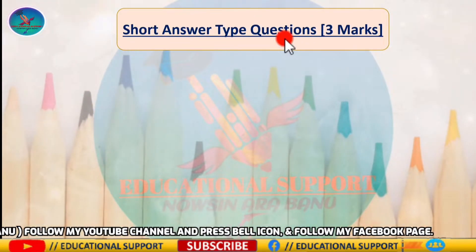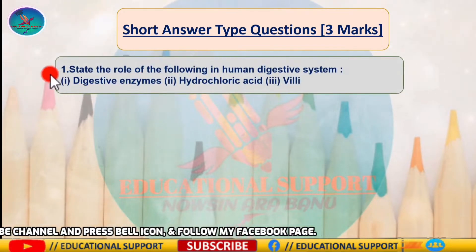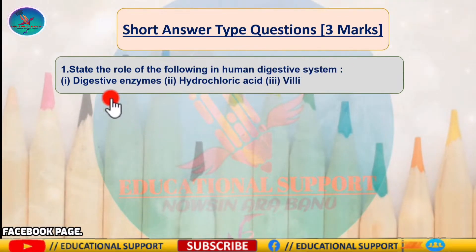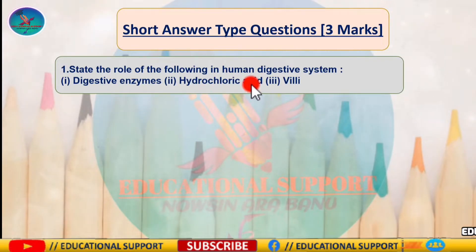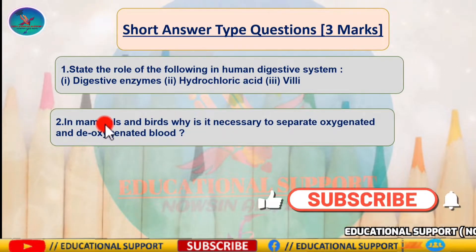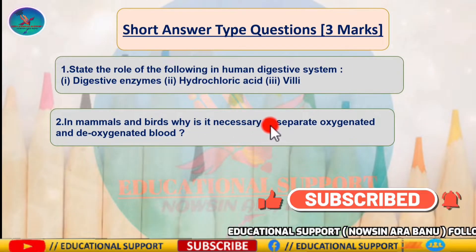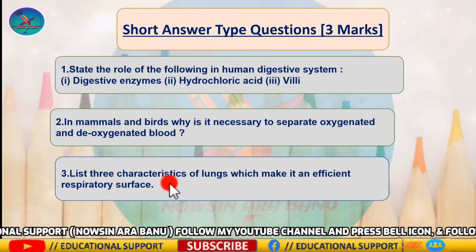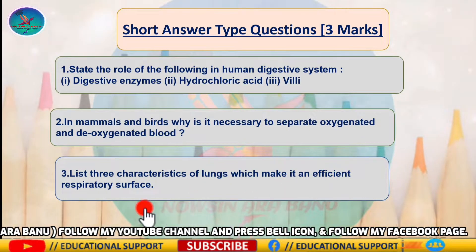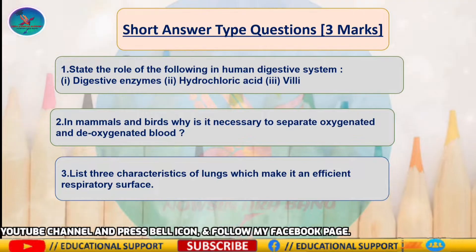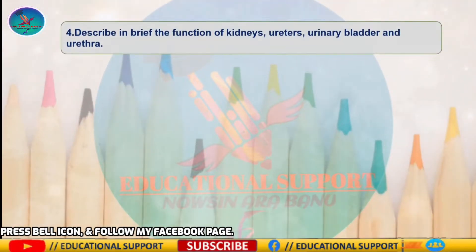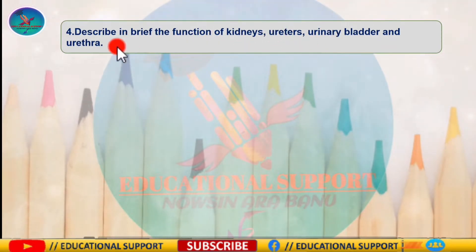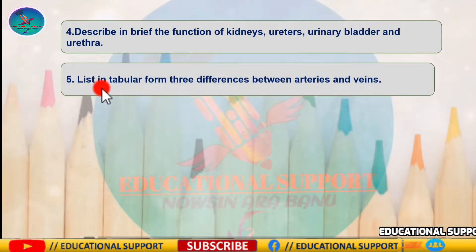Short answer type — three mark questions. Question one: state the role of the following in the human digestive system — digestive enzymes, hydrochloric acid, and villi. Question two: in mammals and birds, why is it necessary to separate oxygenated and deoxygenated blood? Question three: list three characteristics of lungs which make it an efficient respiratory surface. Question four: describe briefly the functions of kidneys, ureters, urinary bladder, and urethra.